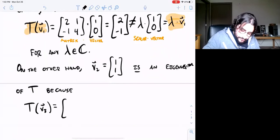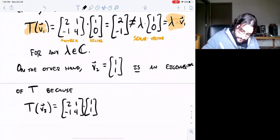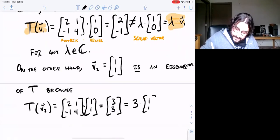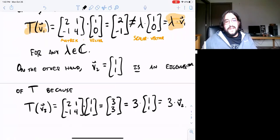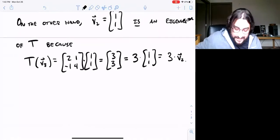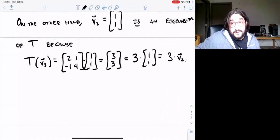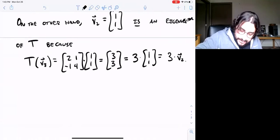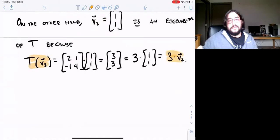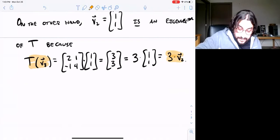Because if you do T(v2), you carry out the matrix multiplication there, you get (3, 3), which is just a scalar, 3, times that original vector. This is just 3 times v2. So there's an example instead of a non-example of an eigenvector.